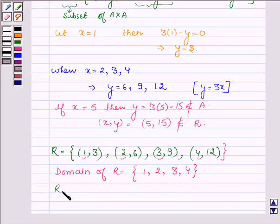Let us find the range of R. Range of R will be the set of elements of these ordered pairs which are the second element, that is 3, 6, 9 and 12.